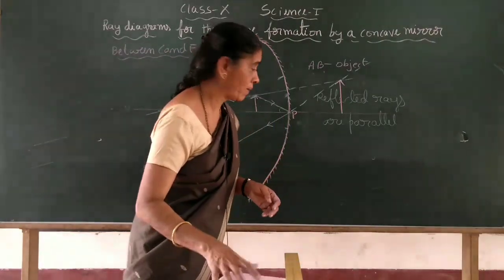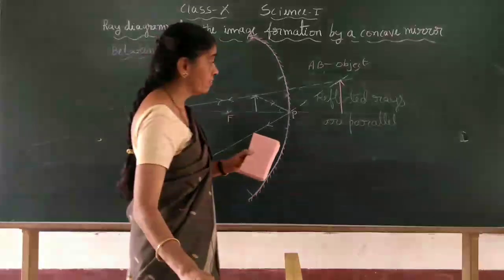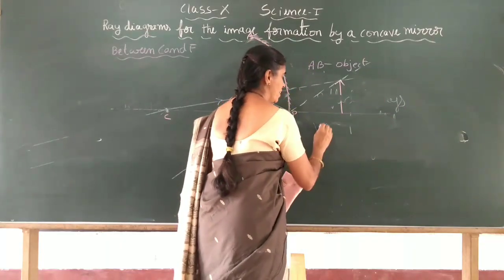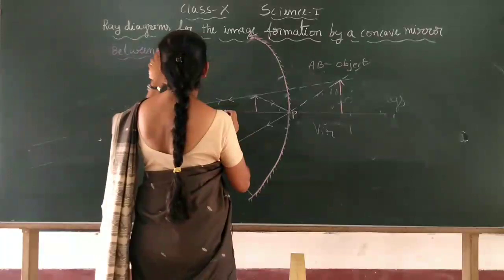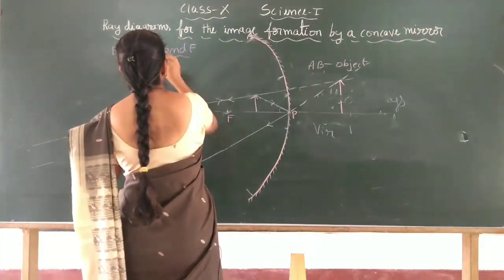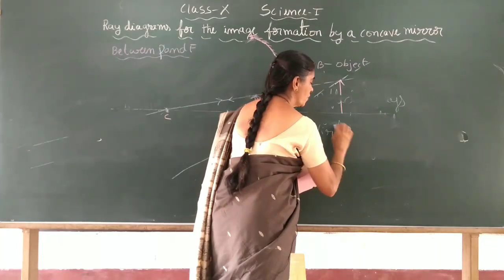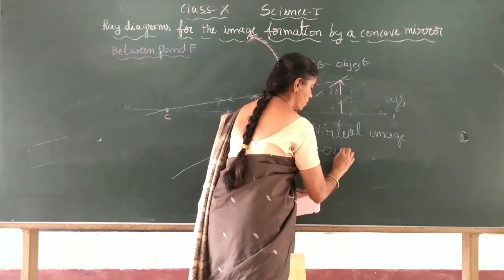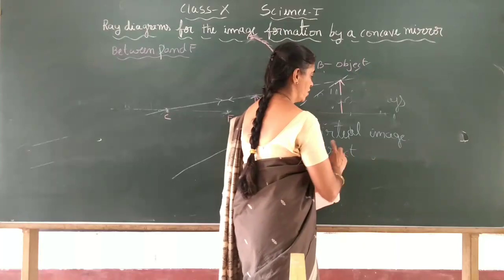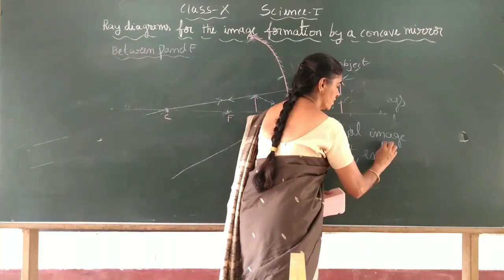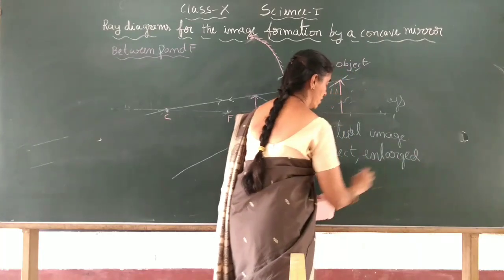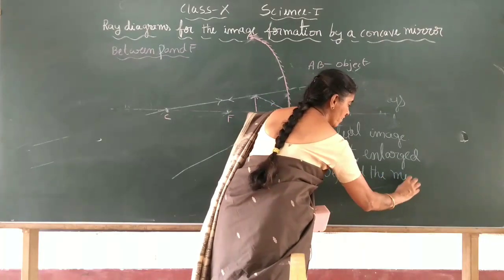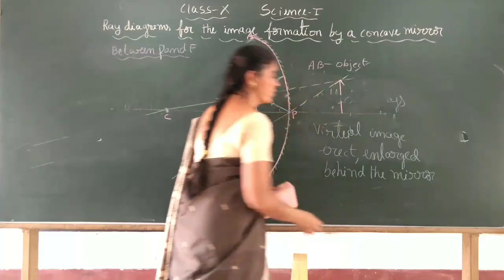The properties when the object is between F and P: the image is virtual, erect, enlarged, and forms behind the mirror. This is the property of the image for this position.